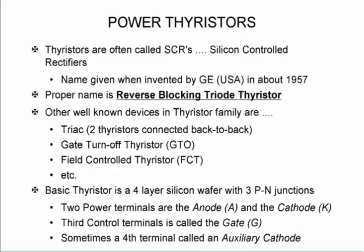Moving over to our thyristors, so called silicon controlled rectifiers. There's different devices like the triac which has got 2 thyristors connected back to back, then we've got the gate turn-off thyristor and the field controlled thyristor. It is a 4 layer silicon wafer with 3 PN junctions. So it's got an anode and a cathode very similar to the diode, but now it's got a control third terminal called the gate.